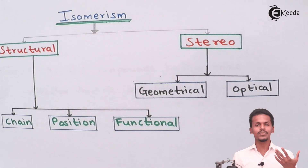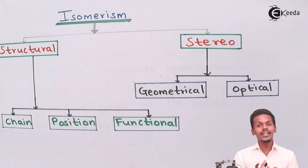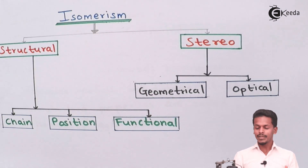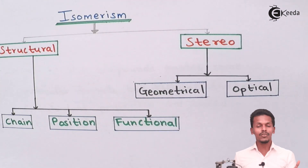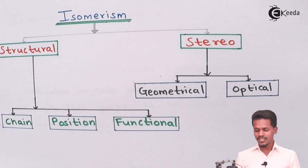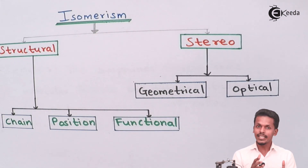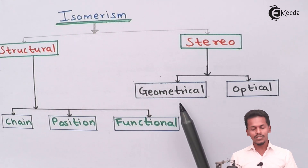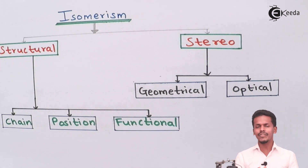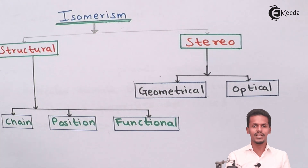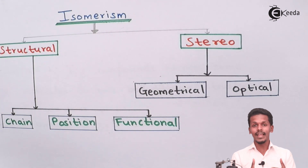Now let us talk about stereoisomers. Stereoisomers are isomers that have a different arrangement of atoms in space — that is, different spatial arrangement of atoms. It can also happen that when talking about chain isomers, which are related to the carbon skeleton, stereoisomers can also be formed. In stereoisomers, each atom is arranged in a different manner compared to the other molecule.